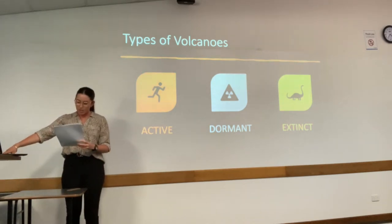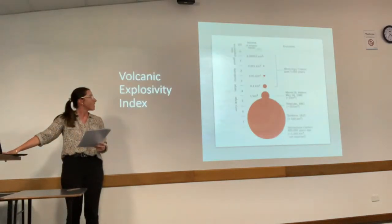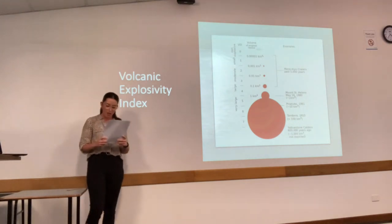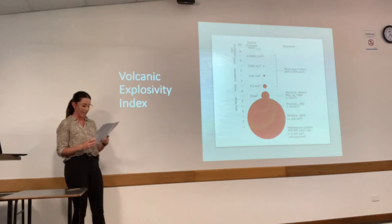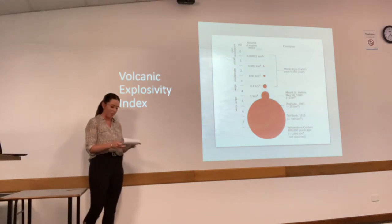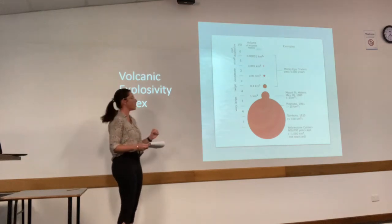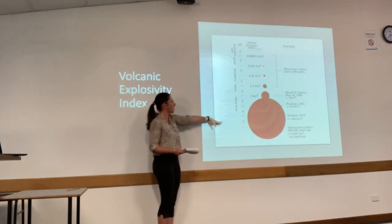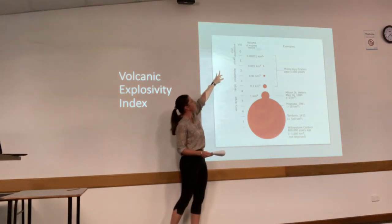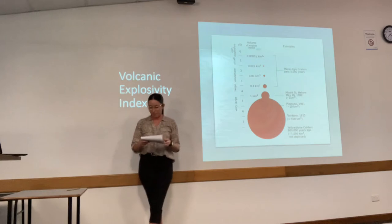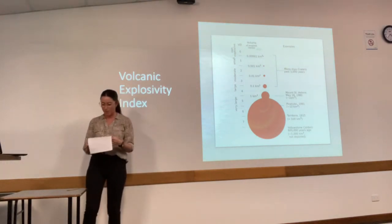To measure how explosive volcanoes are, there is a special scale we use called the Volcanic Explosivity Index. It describes the size of volcanic eruptions based on the magnitude and intensity, and it uses a numerical scale from 0 to 8, with 8 being the highest and 0 being the lowest, based on the ejected volume of lava within the explosion.